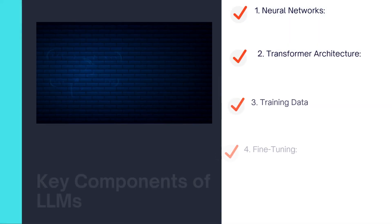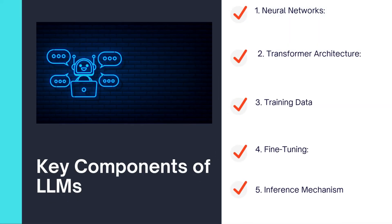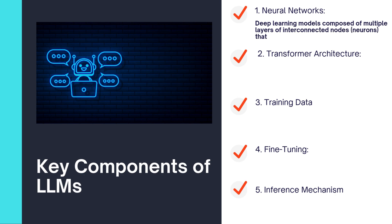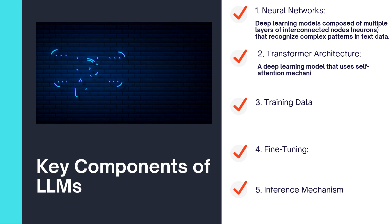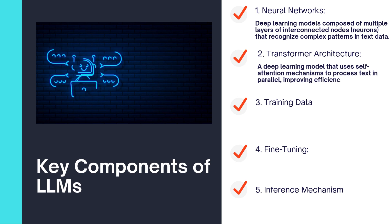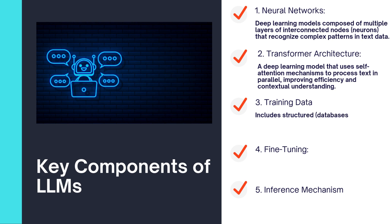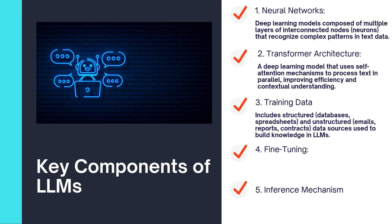Key components of LLMs. Neural networks: deep learning models composed of multiple layers of interconnected nodes, or neurons, that recognize complex patterns in text data. Transformer architecture: a deep learning model that uses self-attention mechanisms to process text in parallel, improving efficiency and contextual understanding. Training data: includes structured databases and spreadsheets, and unstructured sources like emails, reports, and contracts — data sources used to build knowledge in LLMs.